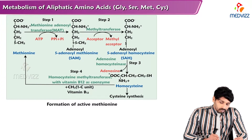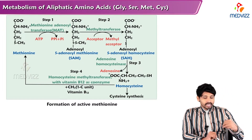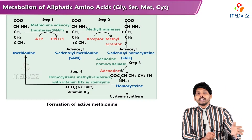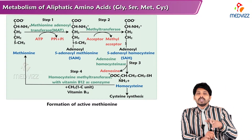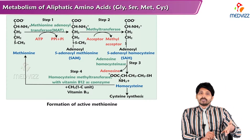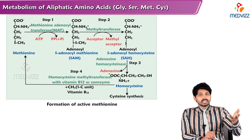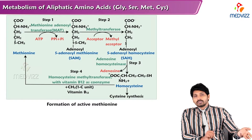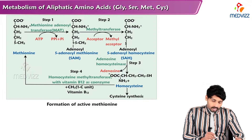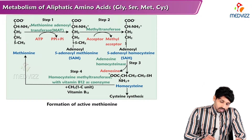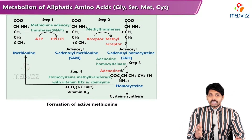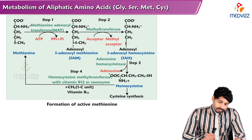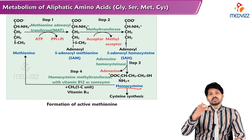In the next step, a methyl acceptor takes up the methyl group from SAM to form S-Adenosyl Homocysteine. When you remove the methyl group from S-Adenosyl Methionine, the leftover part is homocysteine — so SAM is converted to SAH (S-Adenosyl Homocysteine). In the third step, the adenosyl group is removed from SAH to form free homocysteine.